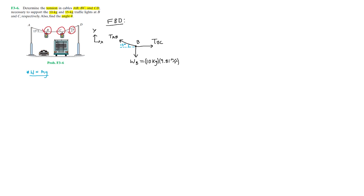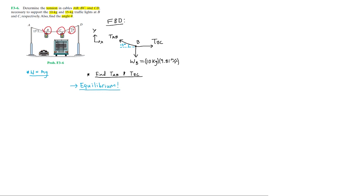Now that we have completed the free body diagram of point B, we can find the tensions TAB and TBC. To solve for forces in statics, we apply equilibrium ensuring the sum of forces equals zero. We already know the weight WB equals 98.1 newtons. Since this known force acts in the y direction, we can solve for TAB first, as it has a component in the y direction.